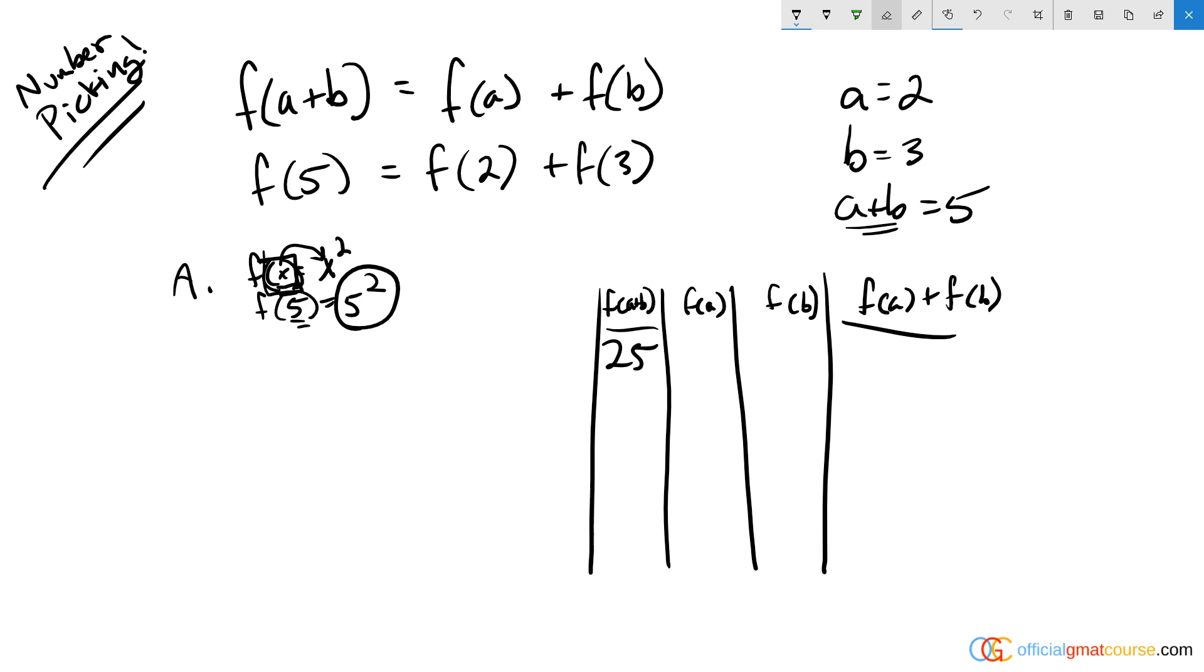If I step back over here and look at the original function again, looking at what we'll get for f of two, f of two is going to equal four, and f of three is going to equal nine. So f of two plus f of three is going to equal 13, which is not equal to 25. So this is obviously out.